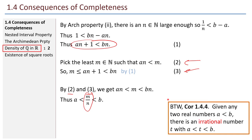Interestingly, corollary 1.4.4 states that given any two real numbers A < B, there is also an irrational number T with A < T < B — so the irrational numbers are also dense in the real numbers.